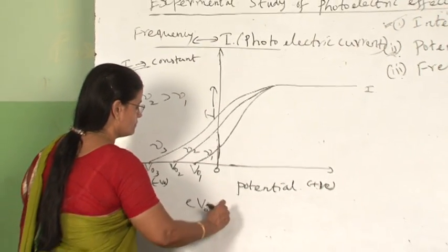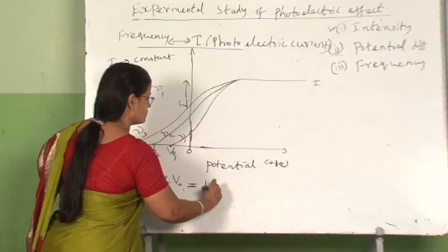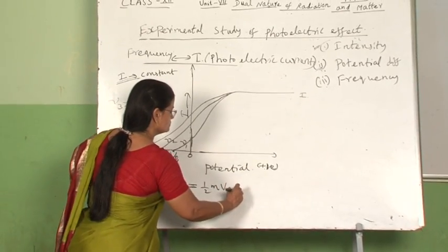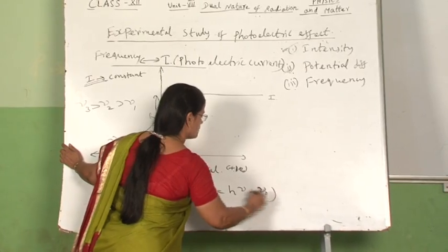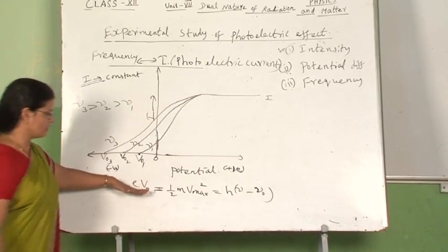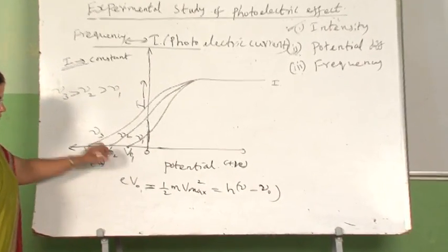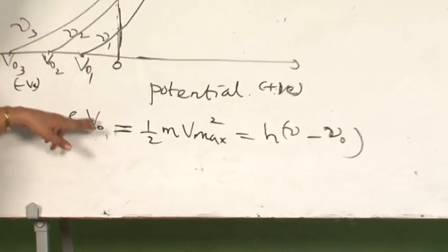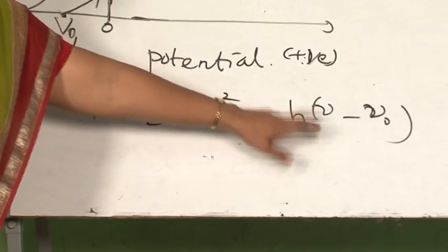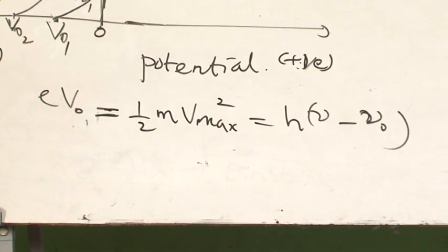If you remember this equation, from here we can clearly understand that kinetic energy, which is the measure of stopping potential, depends only on the frequency but not on the intensity.